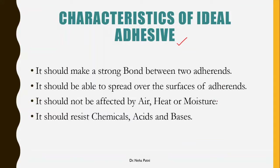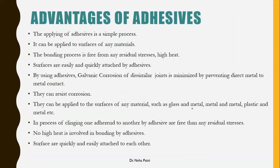Let us go ahead with what are the general characteristics of an ideal adhesive. First of all, it should make a strong bond between the two adherents. It should be able to spread over the surfaces properly. It should not be affected by different parameters like air, heat, moisture, acids, bases, or other chemicals.